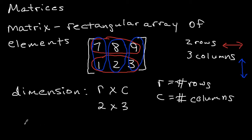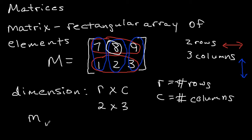The last thing we can do is specify the entry we're looking at. Let's say I want to specify the number eight. I would first give this matrix a name — let's say it's matrix M, capital M. We write a lowercase m for an entry of matrix M, then specify the row number and column number. Eight is in the first row, so the row number is one, and it's in the second column, so the column number is two. So M₁₂ equals eight. If you know the row number and the column number, you can specify any element in the matrix. The elements are just the numbers inside the matrix. So that's matrix basics, and I hope that helps.